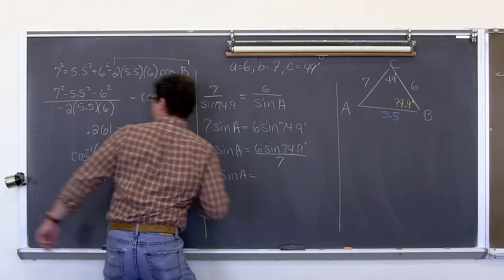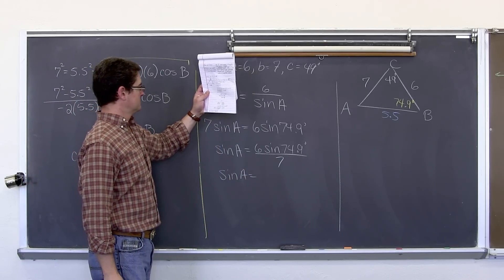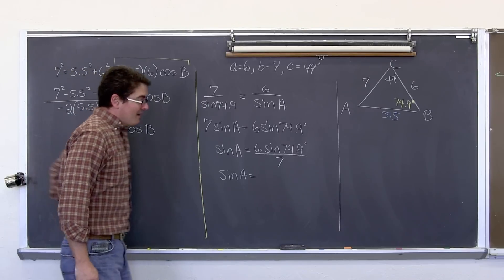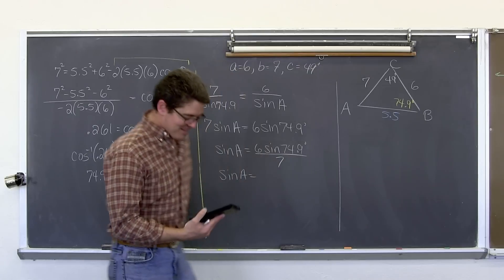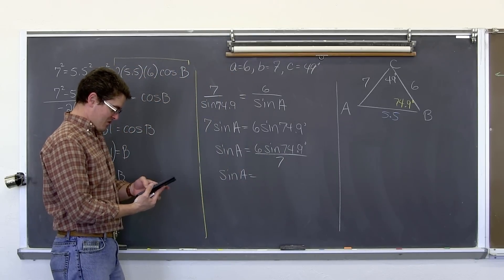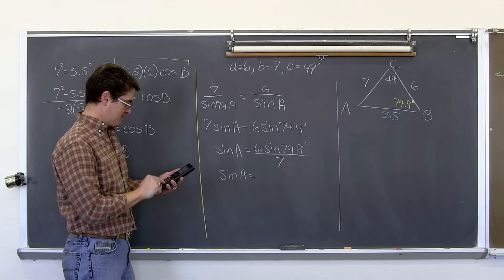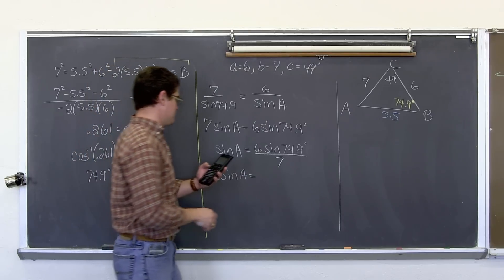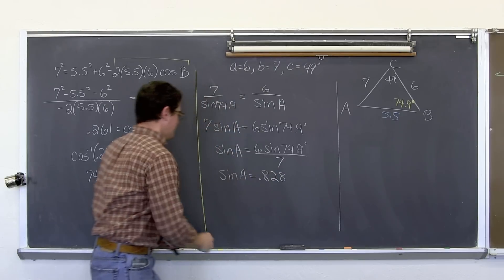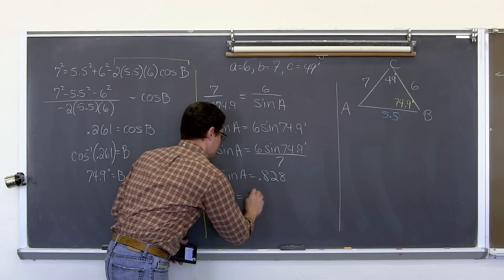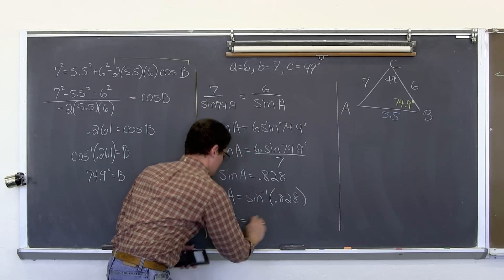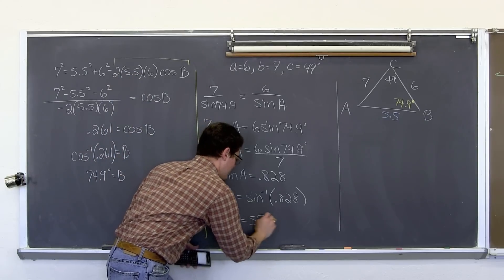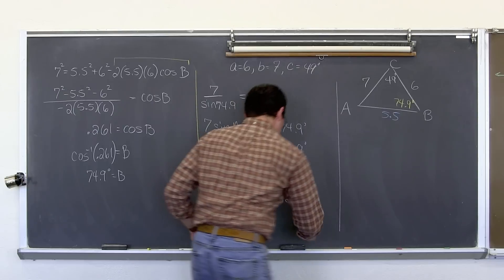That means the sine of A is going to come out to be... I picked a different number, so I will be right back with the calculator. Okay, so 6 sine of 74.9 divided by 7 comes out to be .828. And then A is going to be equal to the inverse sine of that. So A comes out to be the inverse sine of .828, which comes out to be 55.9.